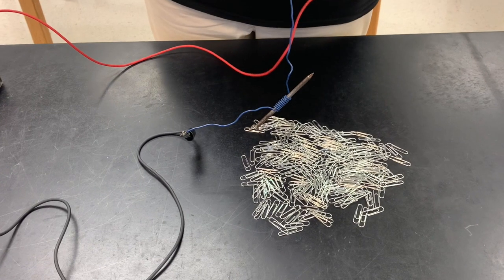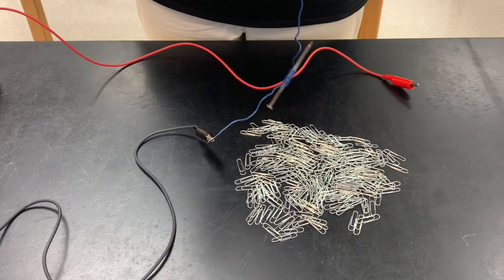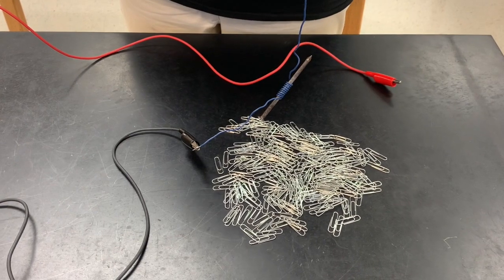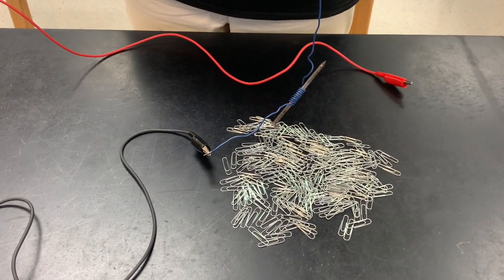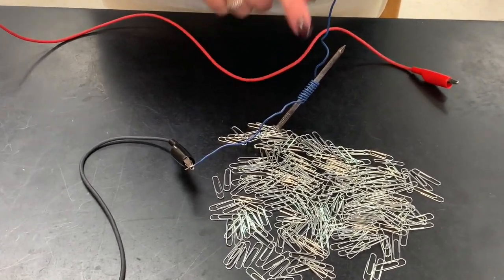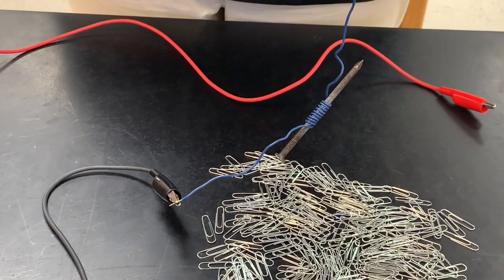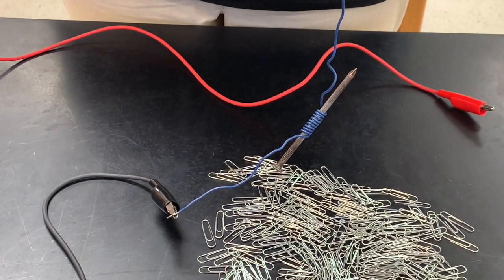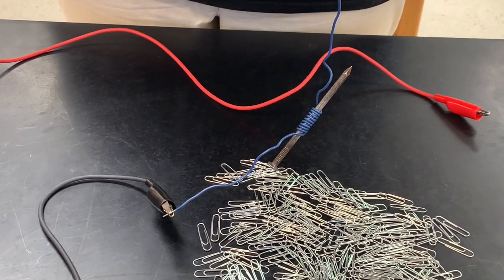Alright everybody so we're back now and one of the things of this lab is what is the effect of the number of coils wrapped around our electromagnet on the strength of the electromagnet. So what is the effect of the number of coils on the magnetic field strength.